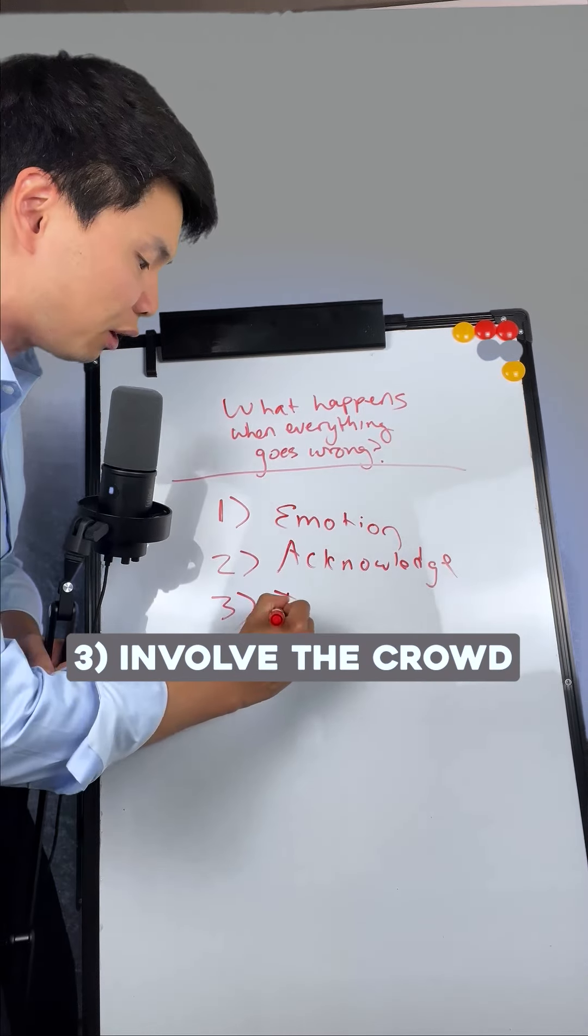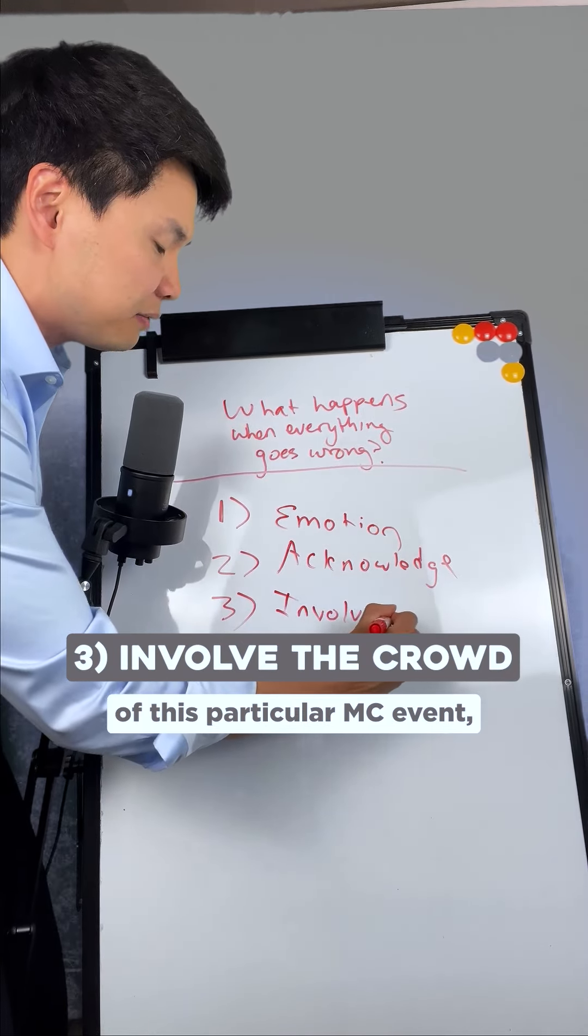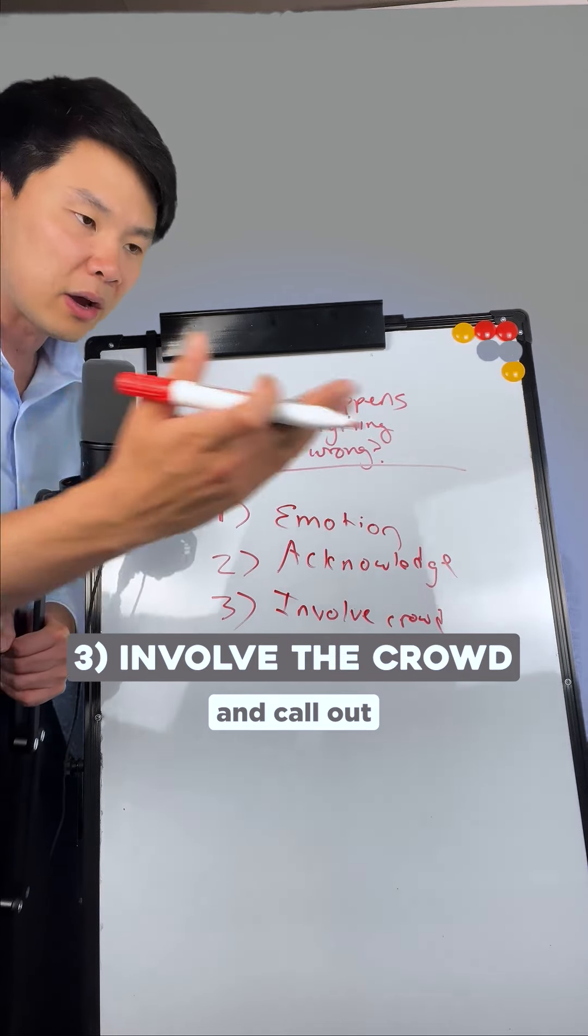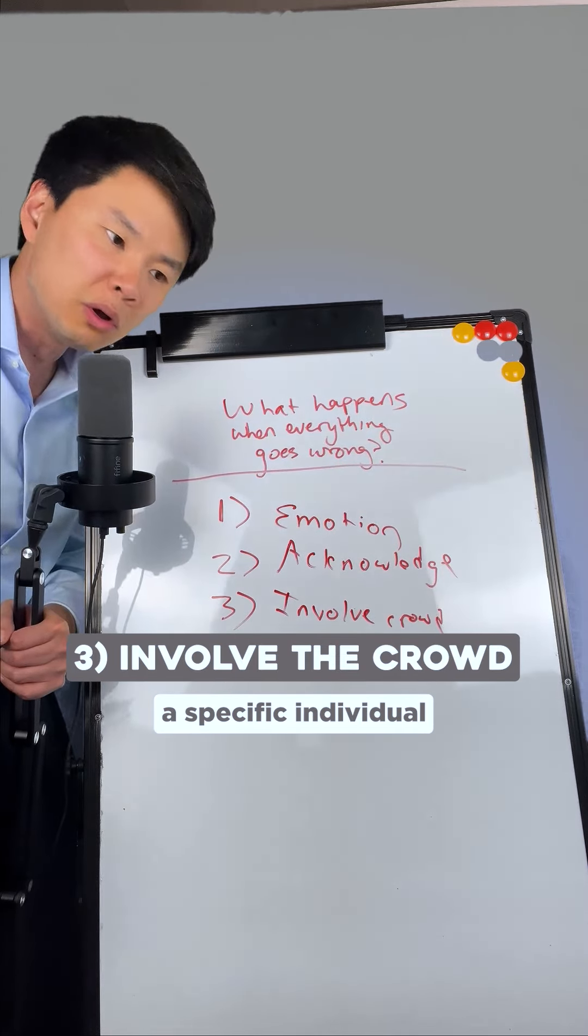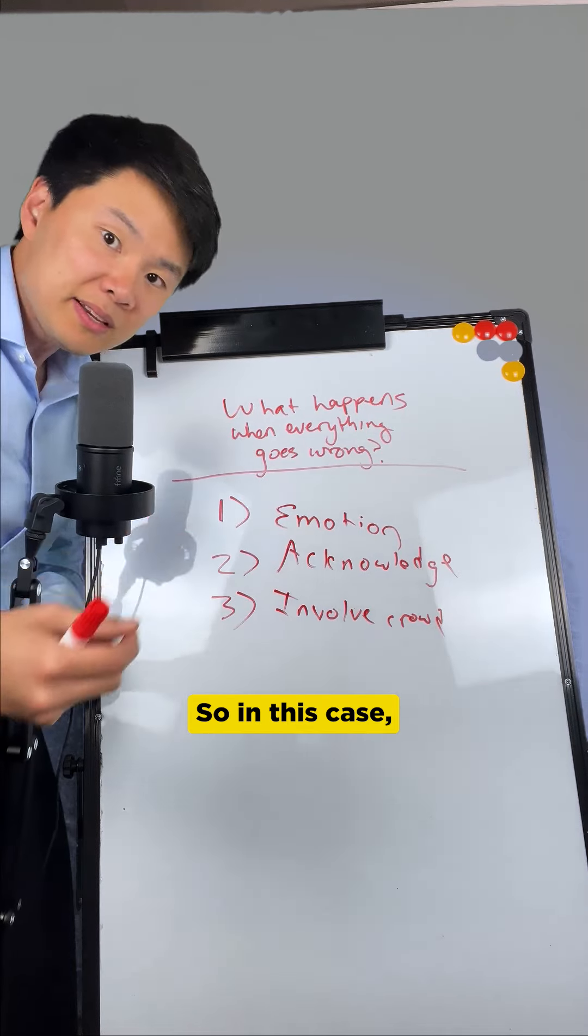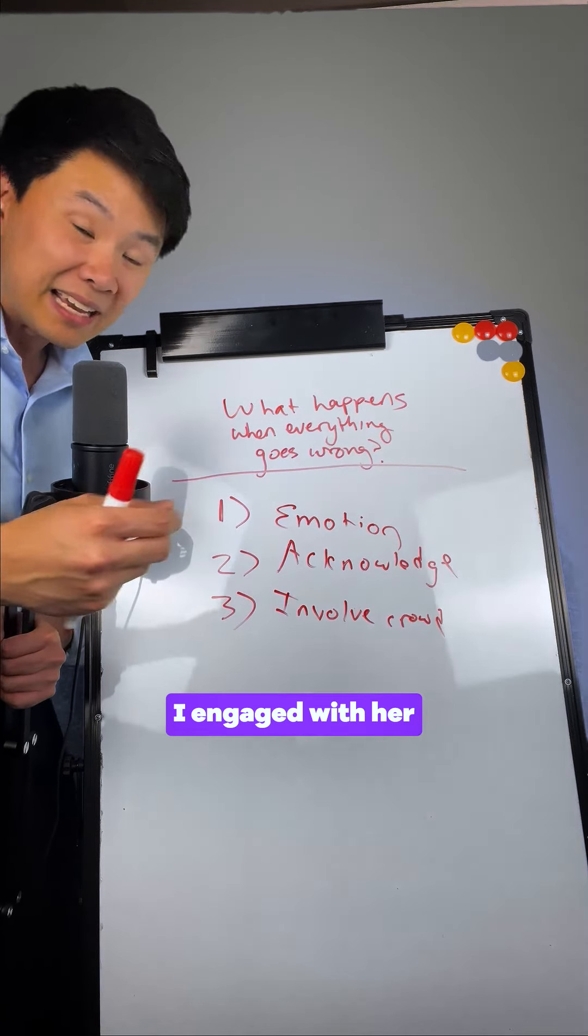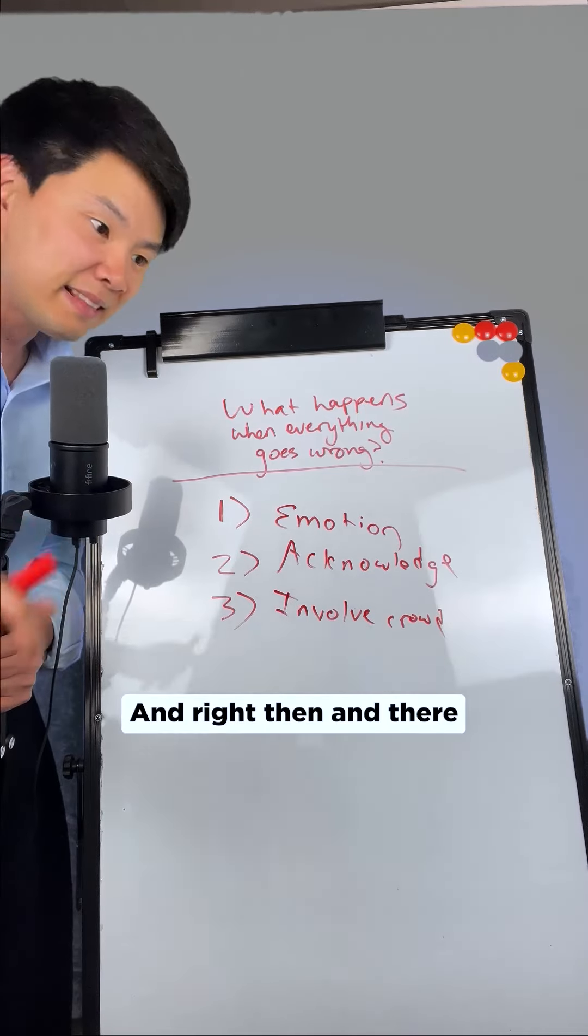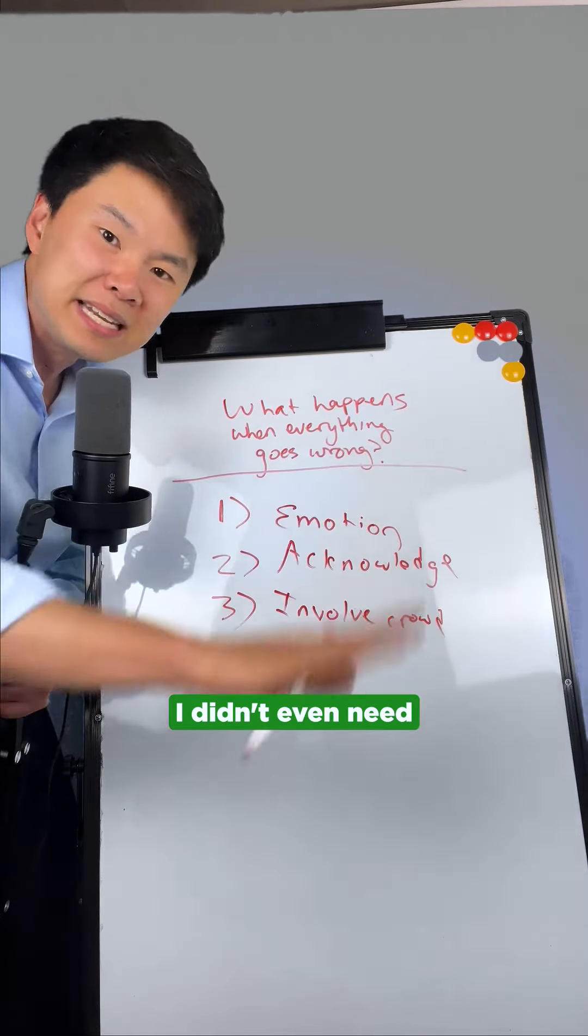And the third thing that I do is I involve the crowd. So in the case of this particular MC event, when the mics didn't work, I wanted to tell a story and call out a specific individual so that it was clear that I was in complete command of the stage. So in this case, I called on my wife to stand up. I engaged with her so the audience could really feel our interaction. And right then and there, it was very clear I didn't even need the perfect setup.